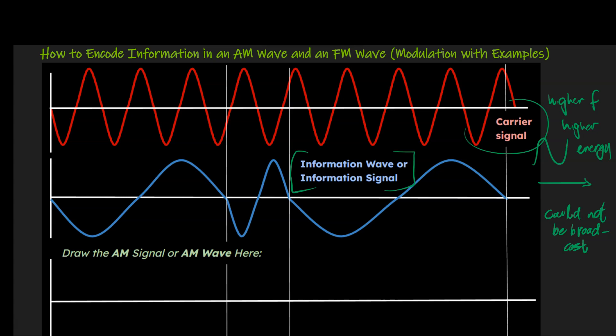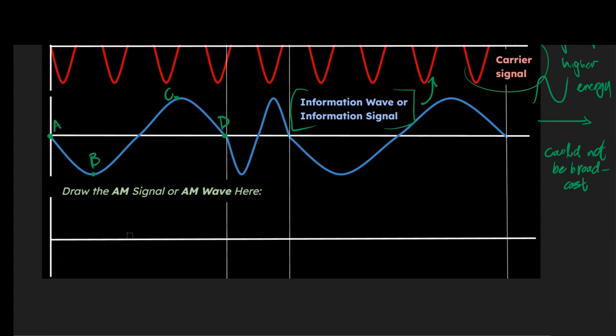So what we do is take this information and encode it into the carrier signal or carrier wave. I'm going to show you two ways this is done today — there are more ways, but this will help you understand how information gets transmitted through radio waves. First, I want to take our information wave and give it some labels so we can talk about it meaningfully: A, B, C, and D, which are going to correspond to A, B, C, and D down below on the carrier wave.